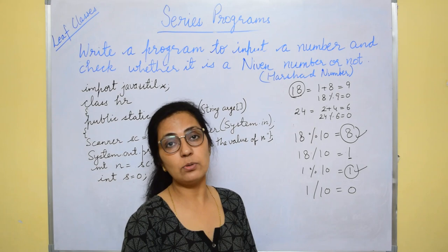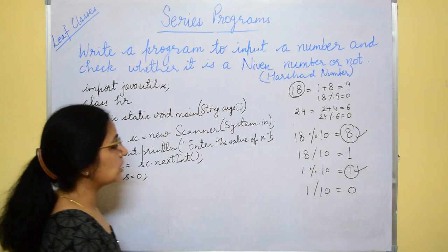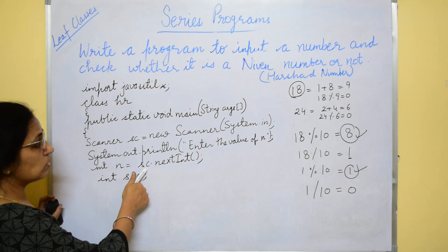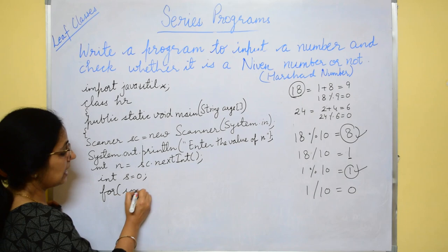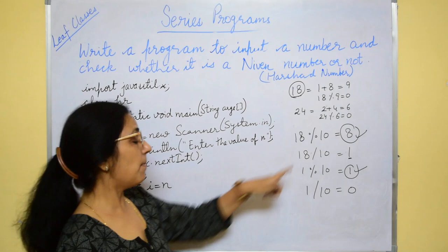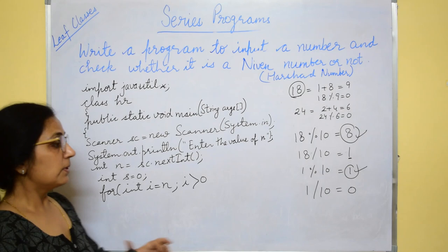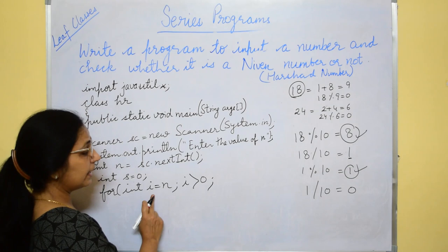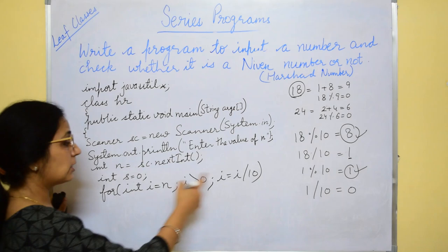To get the quotient, we will use slash operator. For modular slash operator, you can refer to the video operators and expressions in Java which is present in this channel. Now, let's start, we will input the number N using scanner object and we will take the loop inti equals to N because we will be starting with the number. I equals to N, I greater than 0. Till it is more than 0, we have to repeat the process. And how you will get the next i value? I equals to i slash 10. The next quotient.